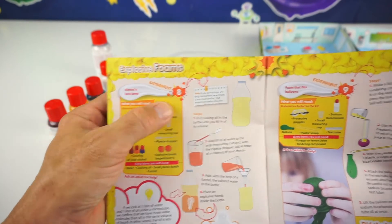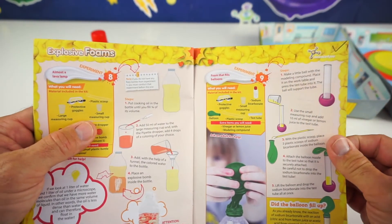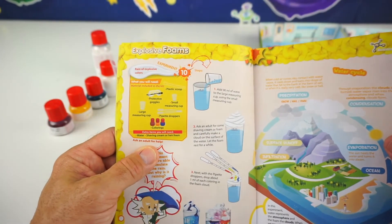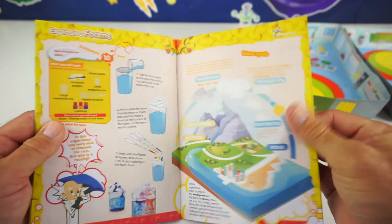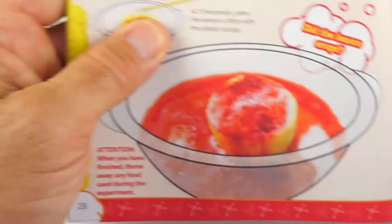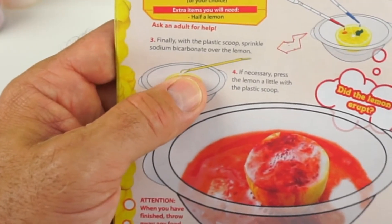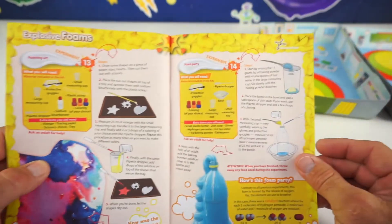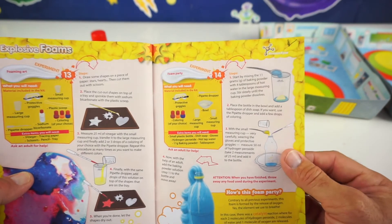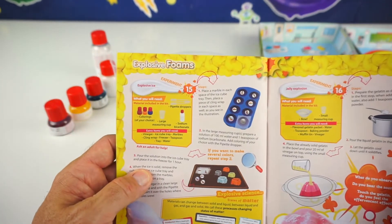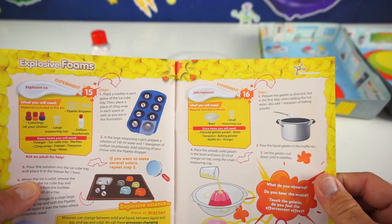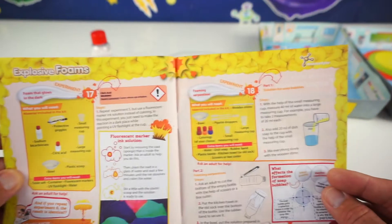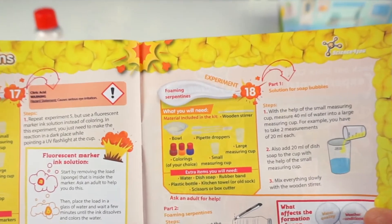Almost a lava lamp, number eight. Foam that fills balloons, number nine. Number ten is rain and explosive colors. Okay, number eleven is citrus foam. And over here it says lemon volcano. Number thirteen foaming art. Number fourteen foam party. Number fifteen explosive ice. And number sixteen jelly explosion. Seventeen foam that glows in the dark. And the last one is called foaming serpentines.